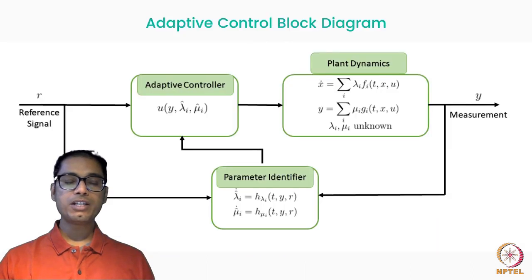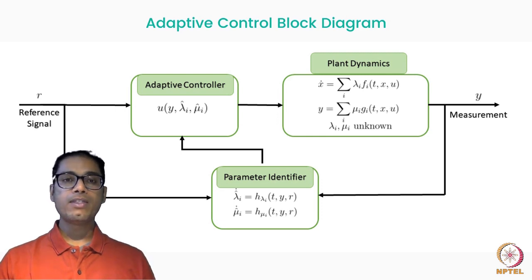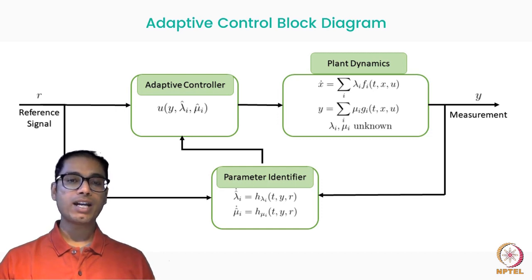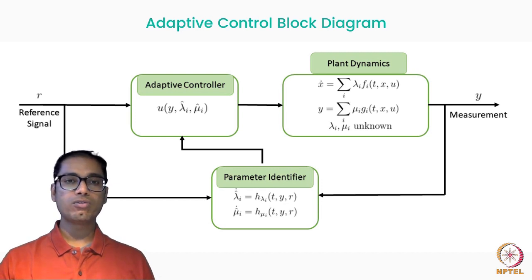If you look at a standard block diagram for an adaptive controller, you find that you have plant dynamics which consist of uncertainties in the form of terms such as lambdas and mus, characterized by uncertain parameters. In a conventional nonlinear controller you would ignore these parameters, but in an adaptive controller you add a parameter identifier block which allows you to achieve tracking in the presence of these uncertain parameters, enabling precise tracking.